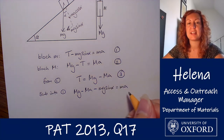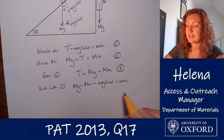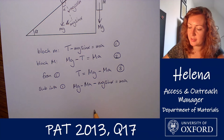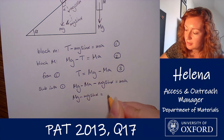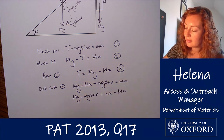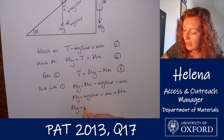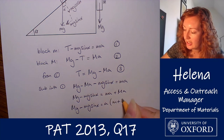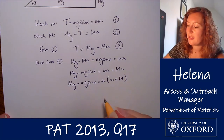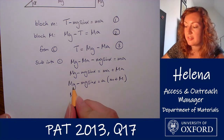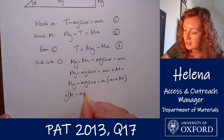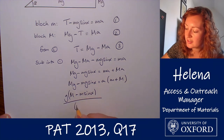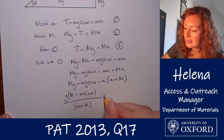Now I want to find the acceleration. Collecting all terms with acceleration on one side gives: Mg minus mg sin alpha equals ma plus Ma. Factorising out a on the right-hand side gives a times the sum of the two masses. Dividing both sides and factorising g on the left gives the acceleration: a equals g times (M minus m sin alpha), all over (m plus M). That is our expression for acceleration.